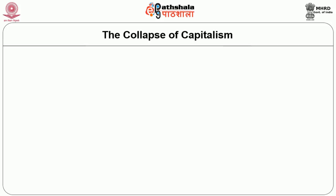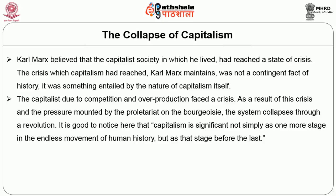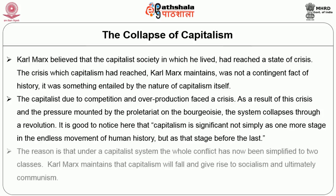Karl Marx believed that the capitalist society in which he lived had reached a state of crisis. The crisis which capitalism had reached was not a contingent fact of history; it was something entailed by the nature of capitalism itself. The capitalists, due to competition and overproduction, faced a crisis. As a result of this crisis and the pressure mounted by the proletariat on the bourgeoisie, the system collapses through revolution. Capitalism is significant not simply as one more stage in the endless movements of human history but as the stage before the last, since under a capitalist system the whole conflict has been simplified into two classes. Karl Marx maintains that capitalism will fall and give rise to socialism and ultimately communism.